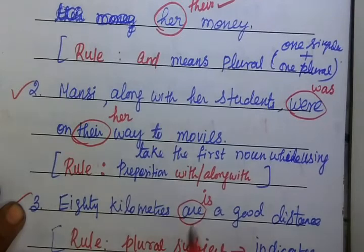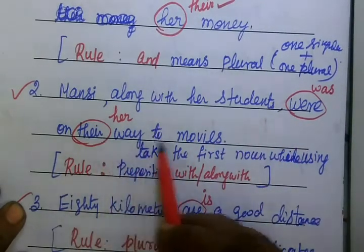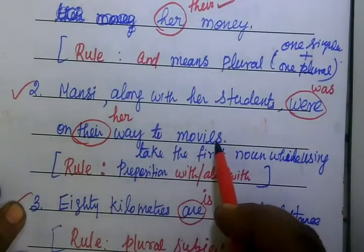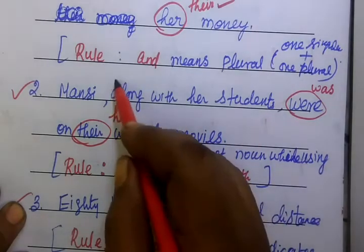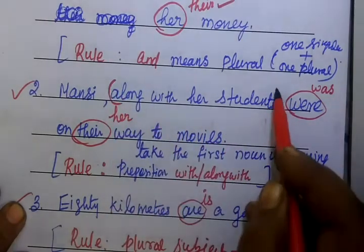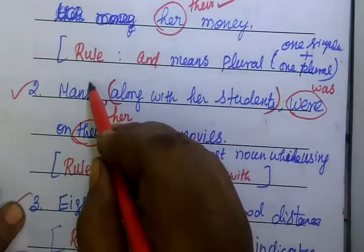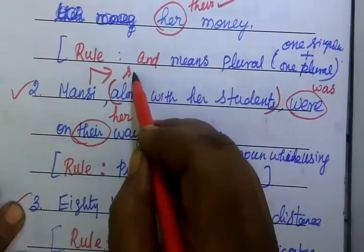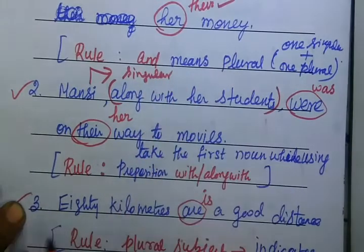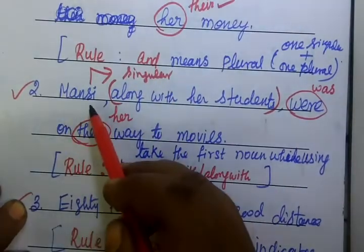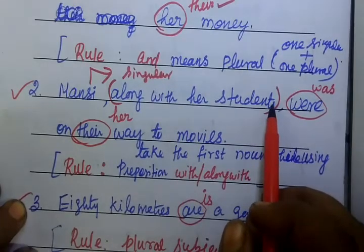Second one: Mansi along with her students were on their way to movies. Here, 'along with her students' is just extra information. We are considering only the main subject, which is 'Mansi' — a singular noun. So the correct verb should be 'was', not 'were'.